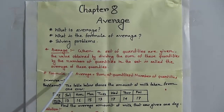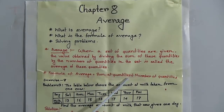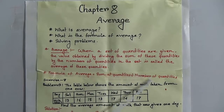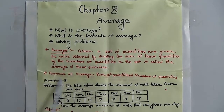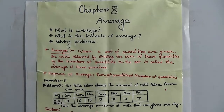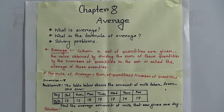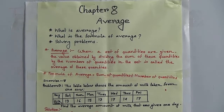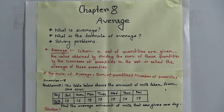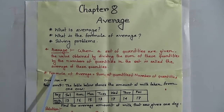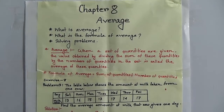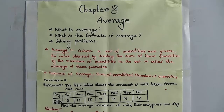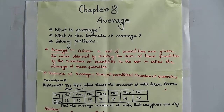Formula of average: sum of quantities divided by number of quantities. You should bear in mind that by using only this formula, we can solve the whole math in this chapter.